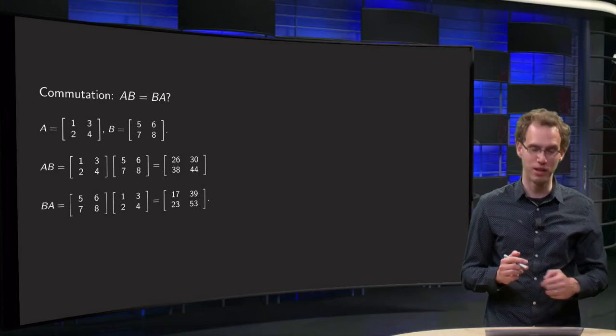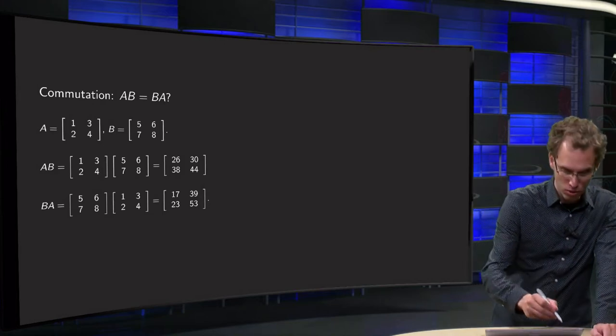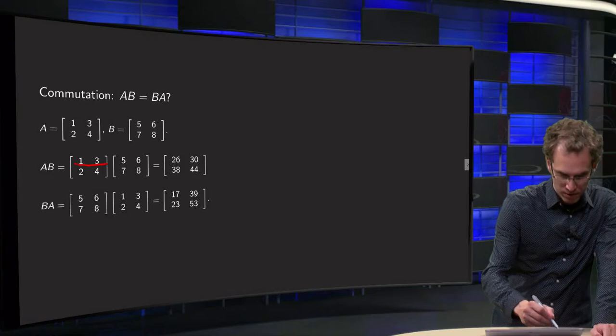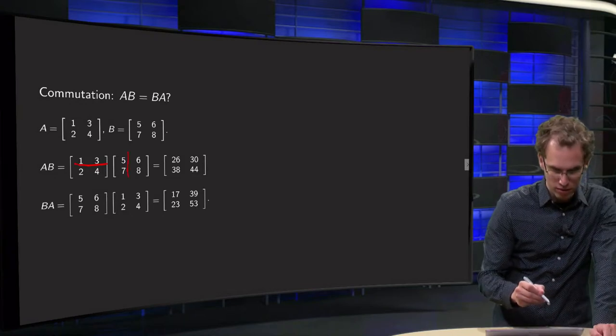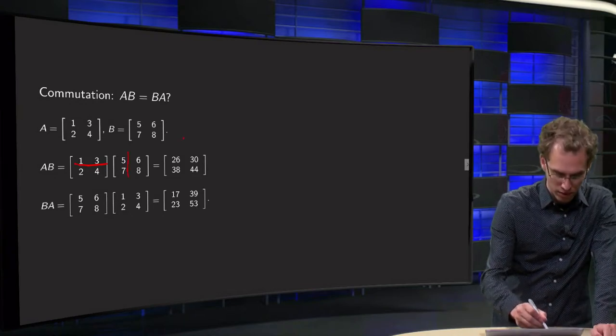What happens if we compute A times B and B times A? Well, let's use the row-column rule. A times B: we get 5 plus 21 equals 26 over there. Then 2 times 5 equals 10 plus 4 times 7 equals 28, equals 38 over there.